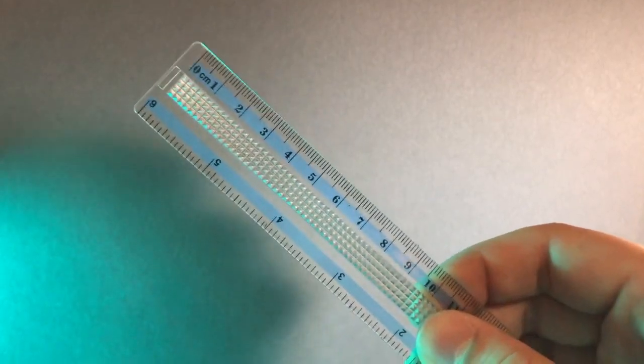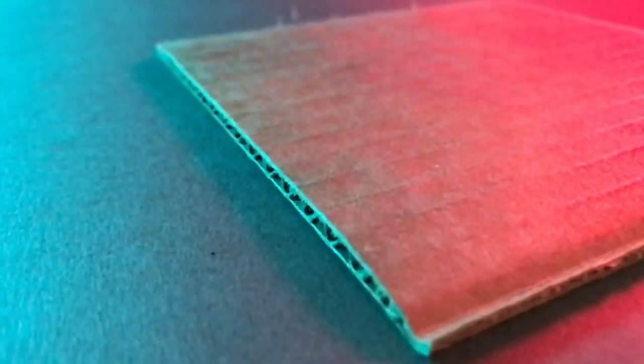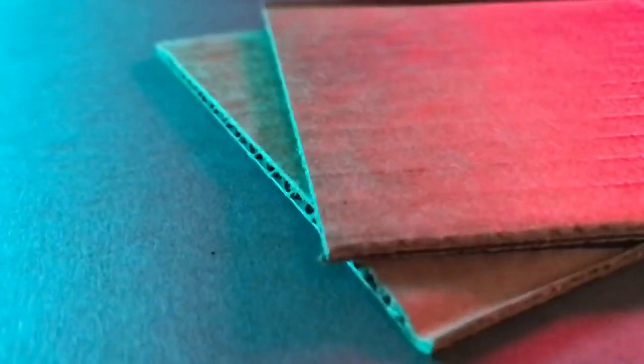For this activity you will need scissors, a ruler, a pencil, glue, and cardboard. Foam core and cereal box cardboard, Bristol or butter boards will also work for this project.